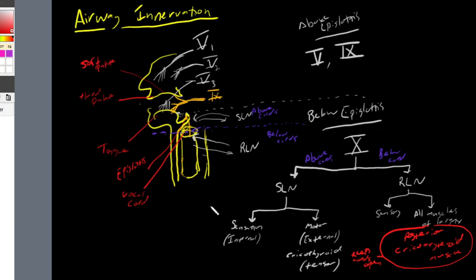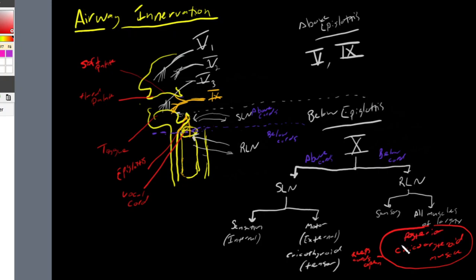To quickly summarize: you can divide everything below the epiglottis into above the cords or below the cords. Above the cords is supplied by our superior laryngeal nerve; below the cords is supplied by our recurrent laryngeal nerve. The superior laryngeal nerve has internal and external branches — the external provides motor function to our cricothyroid muscles, which is a tensor or vocal cord closer. The recurrent laryngeal nerve provides sensation to everything below the cords and motor to all muscles of the larynx except the cricothyroid, most notably the posterior cricoarytenoid muscle, which opens up our cords.